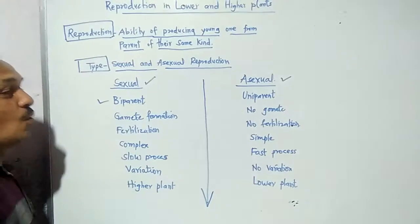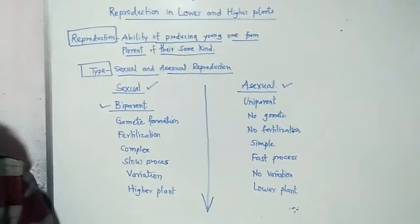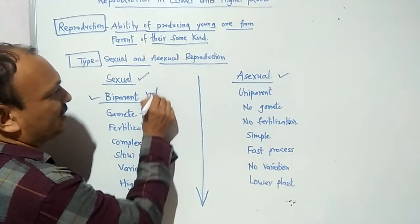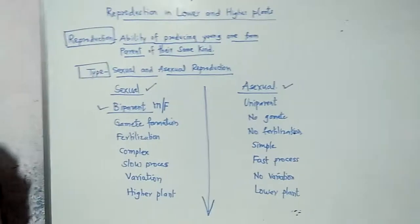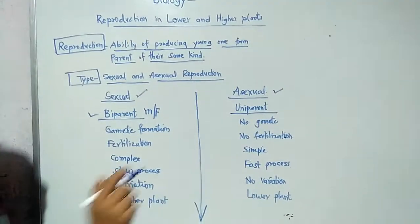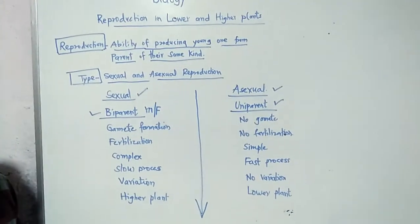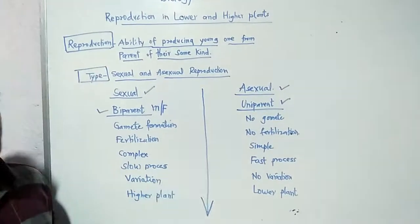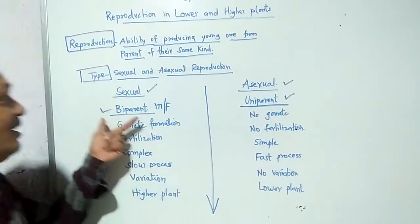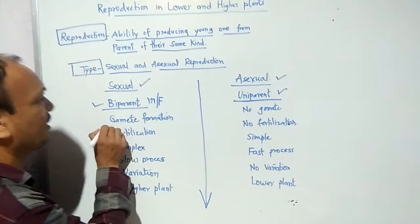First, what does sexual reproduction require? Sexual requires biparents — two parents, meaning male and female. Both parents are required in sexual reproduction. Whereas in asexual reproduction, it is not required — only one parent is required for the new generation. Suppose a rose plant: if you cut the rose plant's stem it will grow, meaning only one parent is taking part.